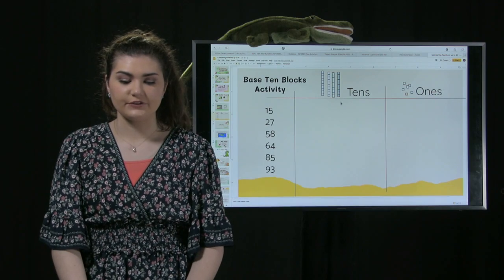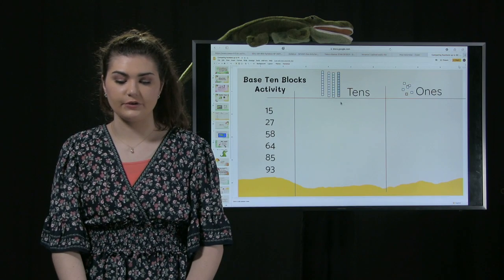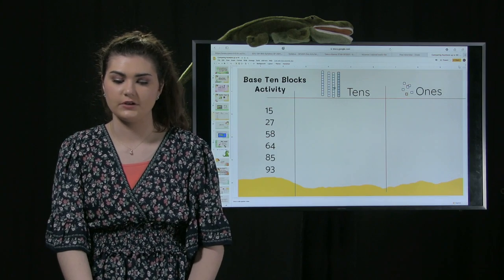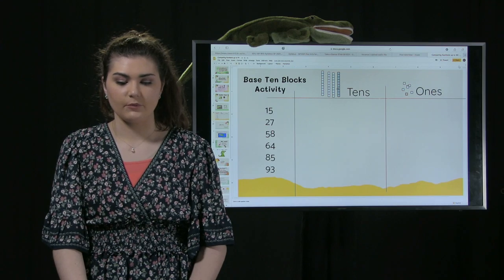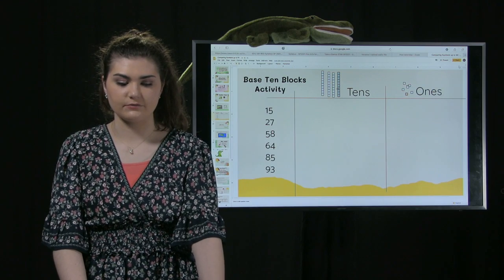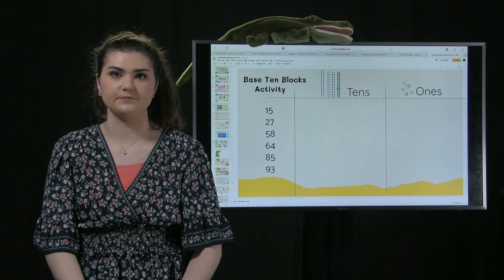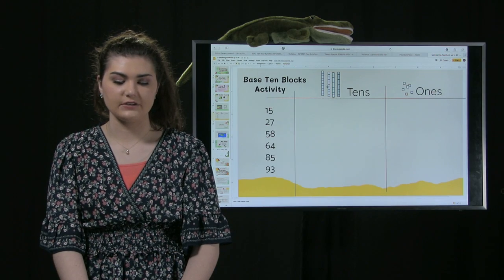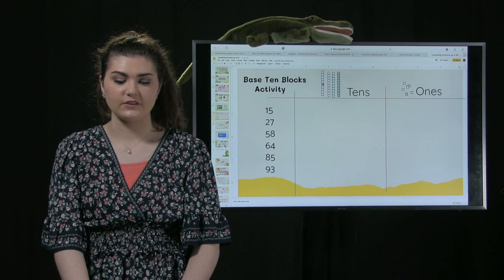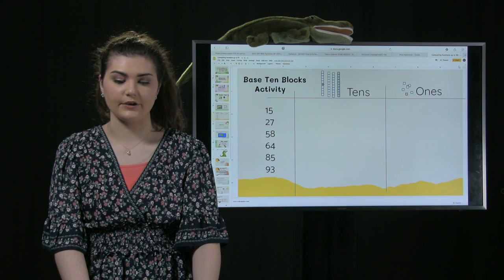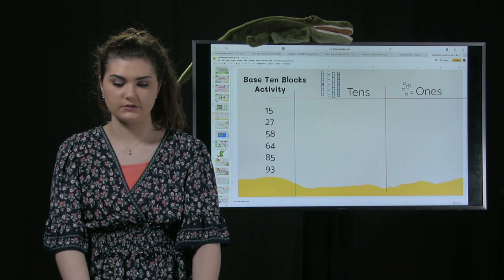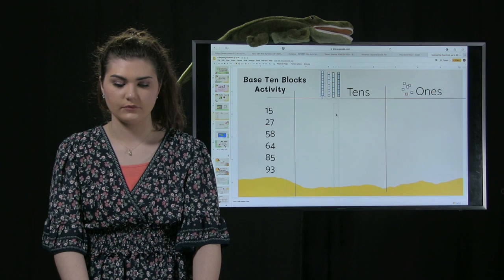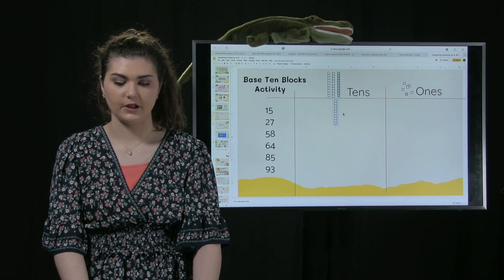I'm going to do the first one or two with you so that you have some guidance on how to do this. We're going to look at the left side of the 15. There's a one in the tens place, which means there is one tens block in the tens place. We're going to drag down one of these blocks.